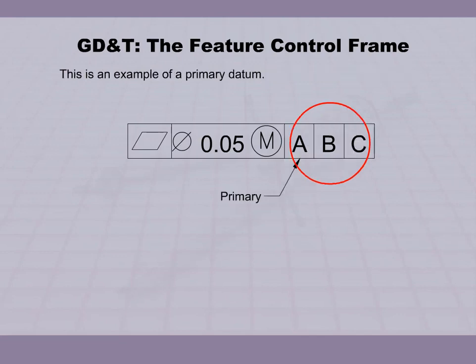This is an example of a primary datum. This is an example of a secondary datum. This is an example of a tertiary datum.